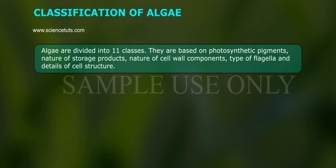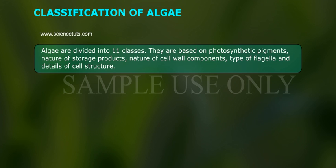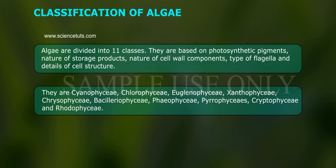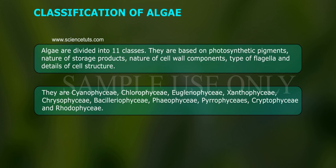Classification of algae: algae are divided into 11 classes based on photosynthetic pigments, nature of storage products, nature of cell wall components, type of flagella, and details of cell structure. They are Cyanophyceae, Chlorophyceae, Euglenophyceae, Xanthophyceae, Chrysophyceae, Bacillariophyceae, Phaeophyceae, Cryptophyceae, and Rhodophyceae.